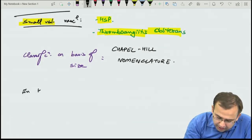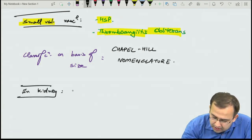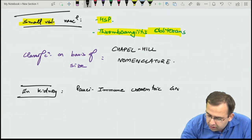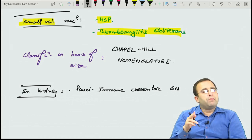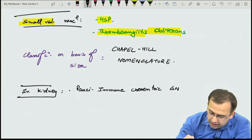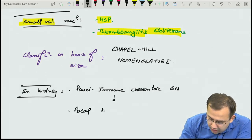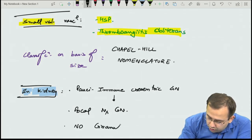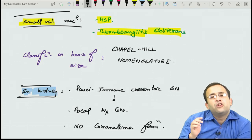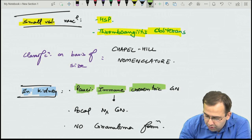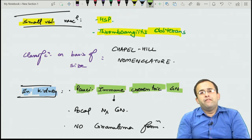In the kidney, Wegener's granulomatosis causes pauci-immune crescentic glomerulonephritis (RPGN), with scant or no immune deposit — specifically focal necrotizing glomerulonephritis. Importantly, Wegener's does NOT cause granuloma formation in the kidney, though it is granulomatous elsewhere. This is Wegener's granulomatosis.